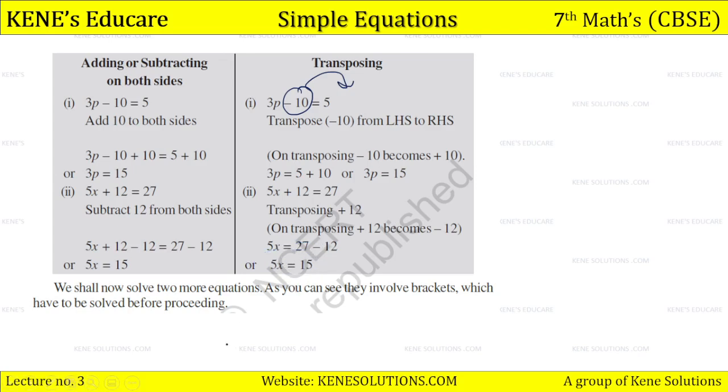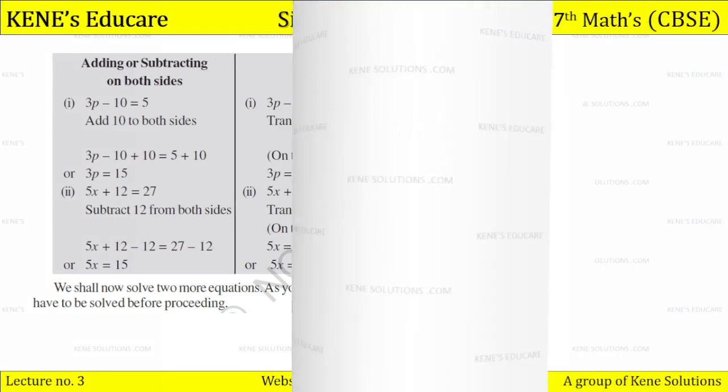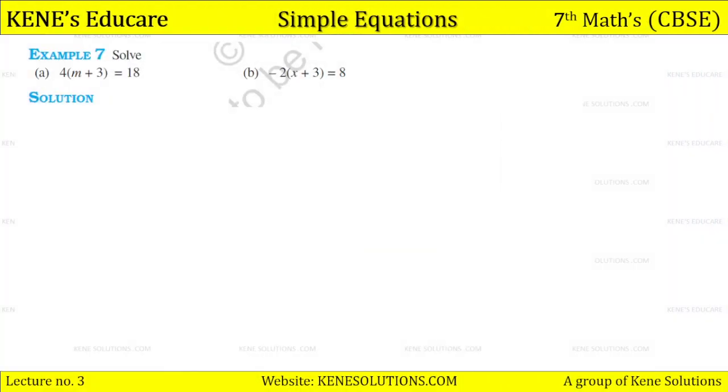So we shall now solve two more equations. As you can see, they involve brackets which have to be solved before proceeding. Example here: 4 times m plus 3 equals 18. So students, here is a bracket - don't forget the bracket. We can use the distributive property we've seen a lot. Here, 4 is multiplied to the bracket m plus 3 equals 18. First we'll write 4 on this side, meaning multiply here becomes divide here. You can solve it this way, or first solve the bracket here: 4m plus 4 times 3 is 12 equals 18.